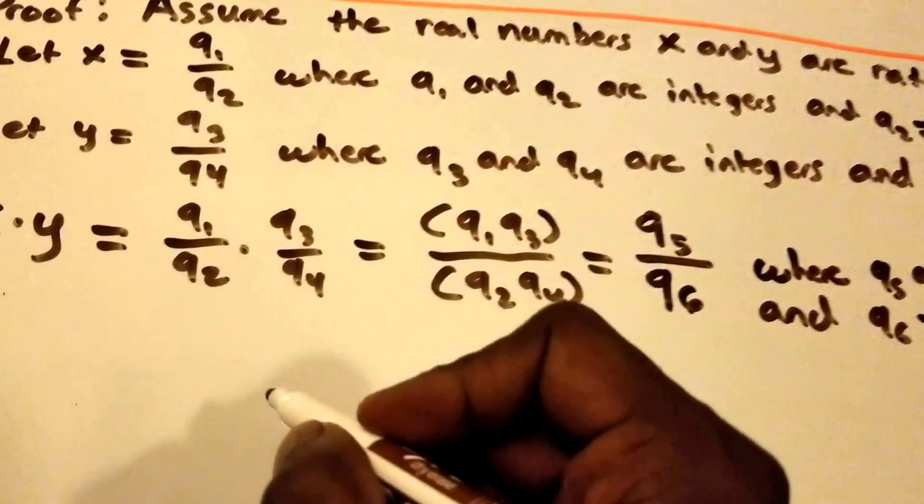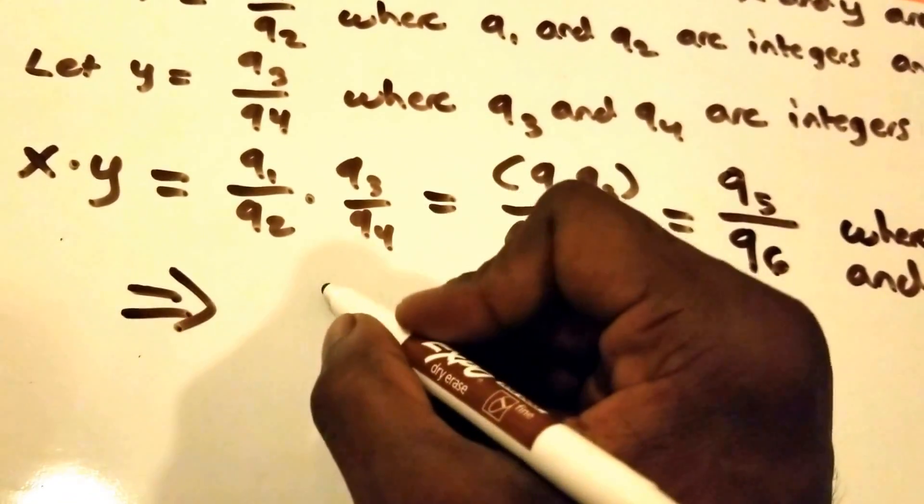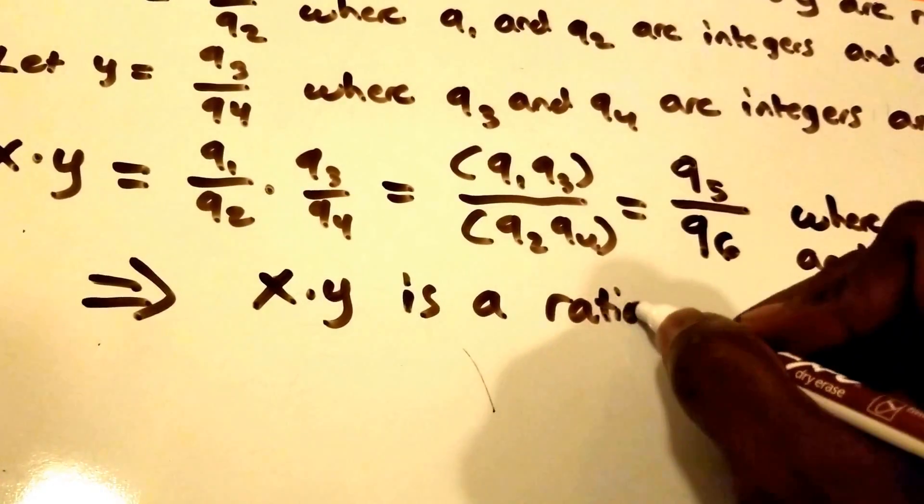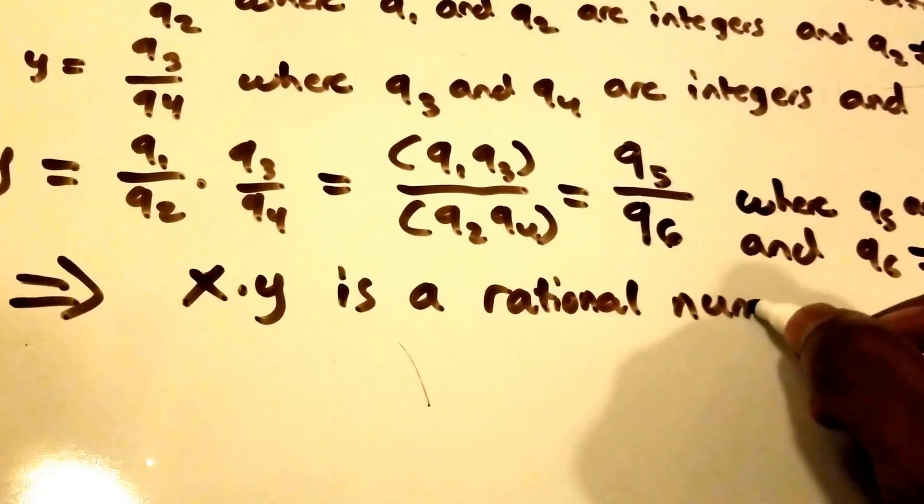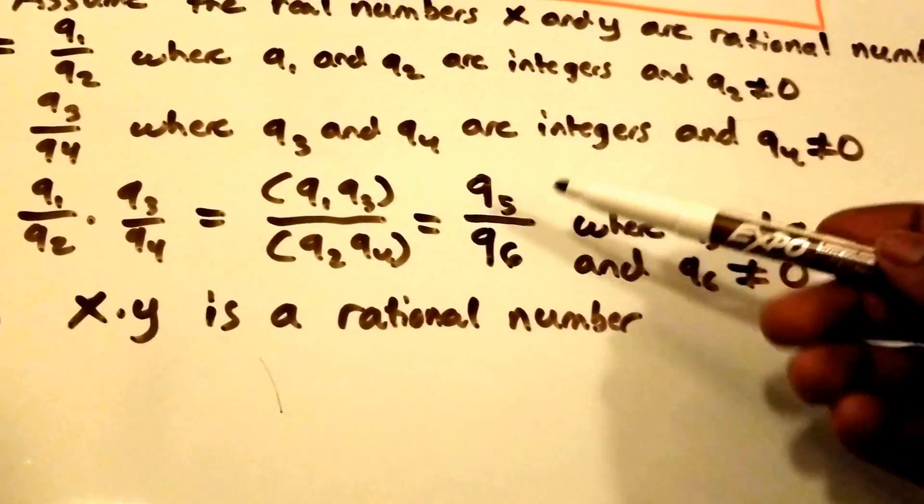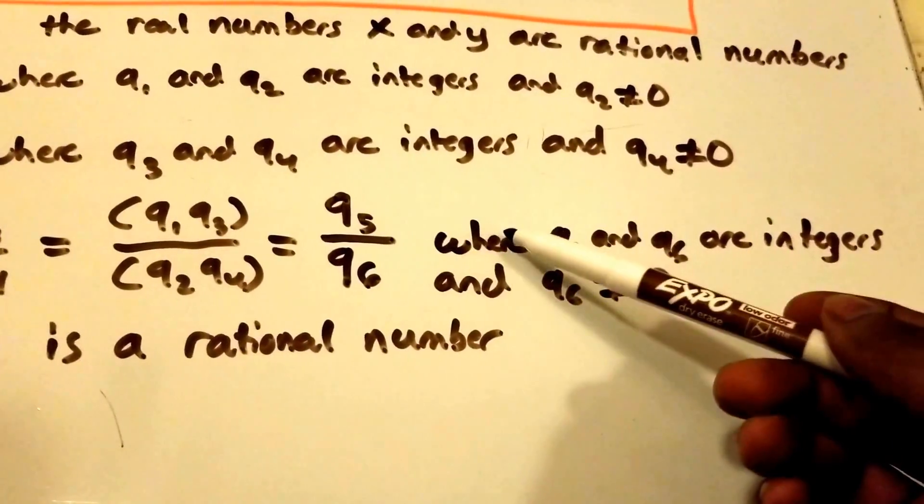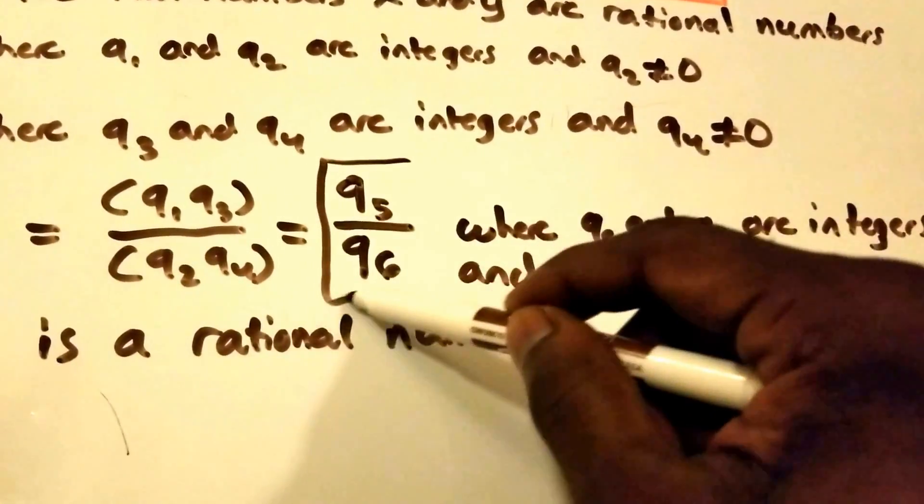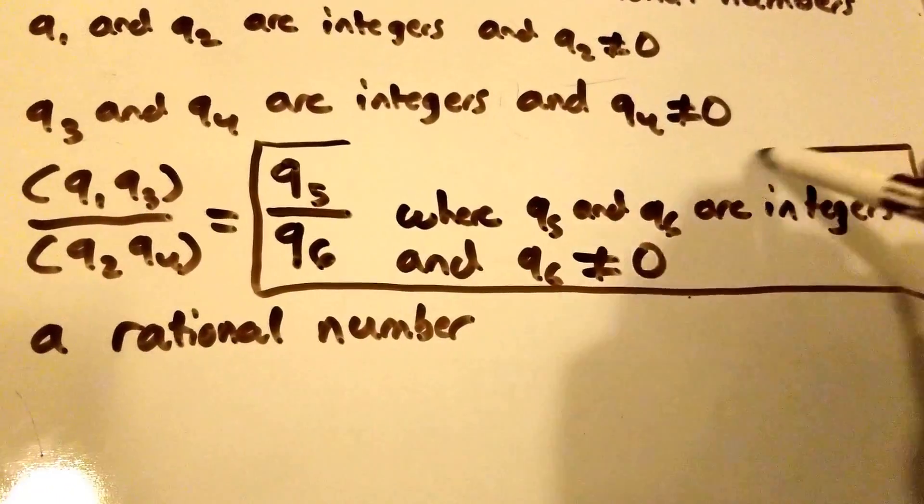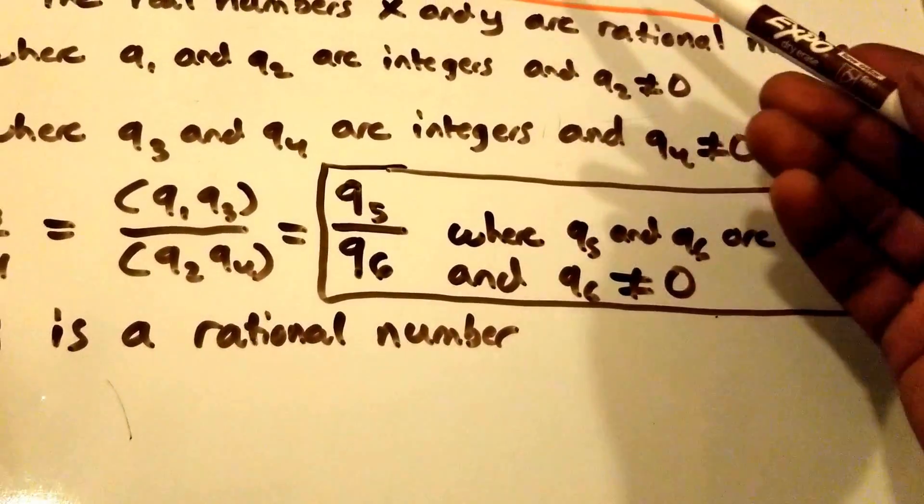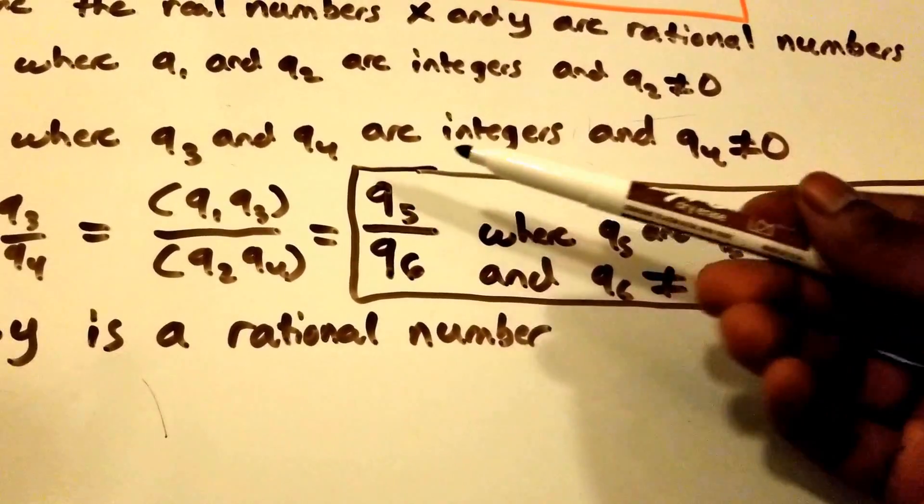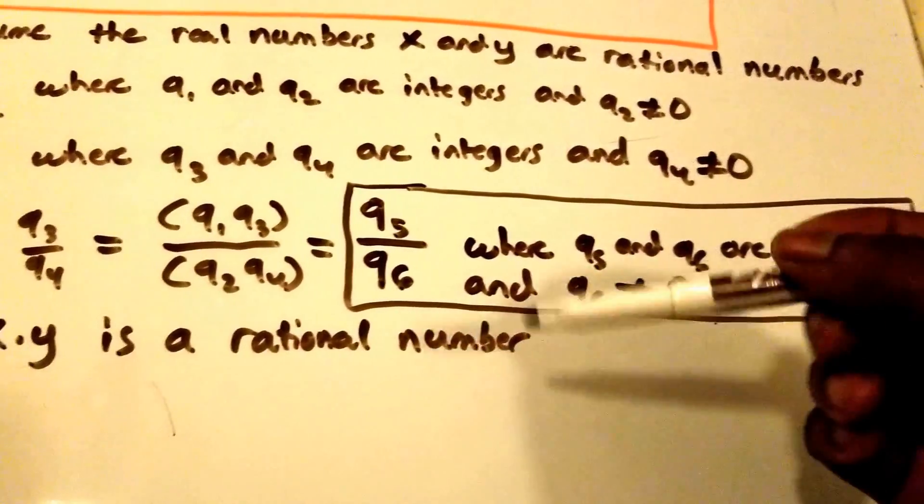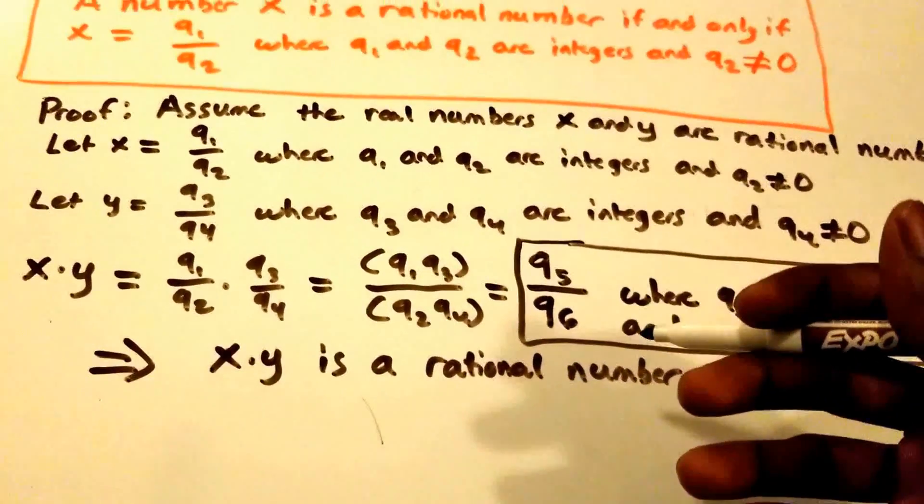So this implies that x times y is a rational number. We have the exact same definition of what it meant for a number to be rational. This here is the exact same definition that we have up here, just replace the 5 for 1 and the 6 for 2 and we'll have the same definition. So having shown this, we conclude that the real number x times y is a rational number.